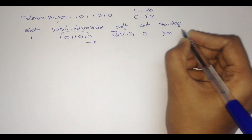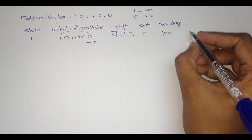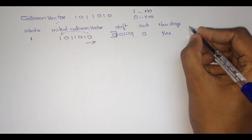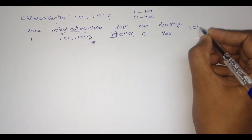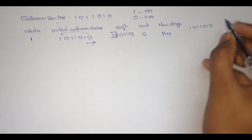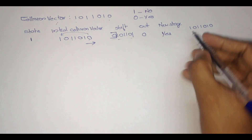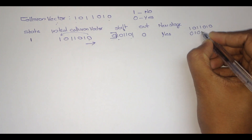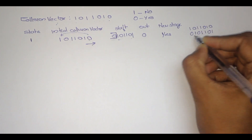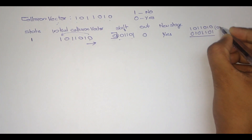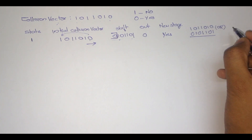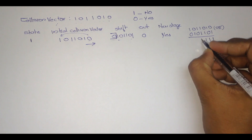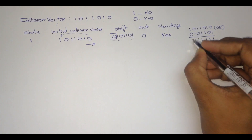So we have to write the new state. We have to perform an OR operation between the initial collision vector 10111010 and the shifted value 0, 1, 0, 1, 1, 0, 1. After performing the OR operation, it will become 1, 1, 1, 1, 1, 1, 1, 1.